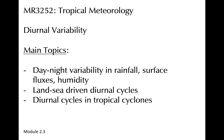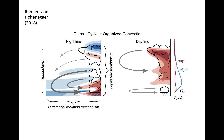This module will discuss the diurnal cycles of convection observed in parts of the tropics. When convection is active, its precipitation is observed to vary based on the time of day, which is related to the variability of shortwave insolation that occurs over a 24-hour period.